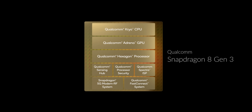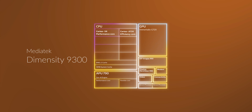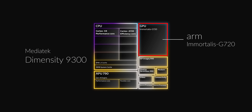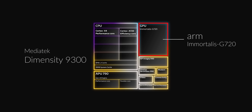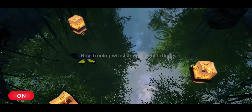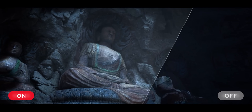On the GPU side of things, you've got the Adreno 750 on the Snapdragon 8G3, whereas the Dimensity 9300 has the ARM Immortalis G720MC12. Both of these GPUs are very powerful and top of the class, and you also get great gaming-specific features like global illumination and ray tracing.